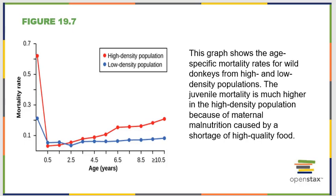When studying how populations exist in an environment, we find they can be curbed by density dependent factors or density independent factors. Density dependent factors are your typical resources — how many individuals can realistically be fed, how many nests can be made, how much water is available. Density independent restrictions come from things like a forest fire — it doesn't matter how many gorillas live in a forest if it's wiped out by fire. The number that survive has nothing to do with how many neighbors they had. Examining these factors can teach us about a population's potential health.